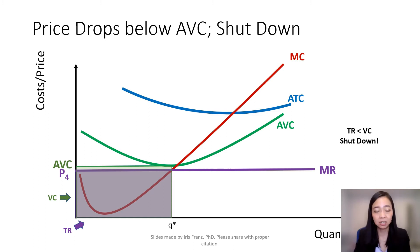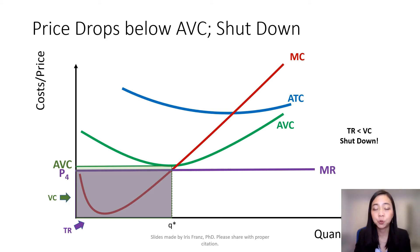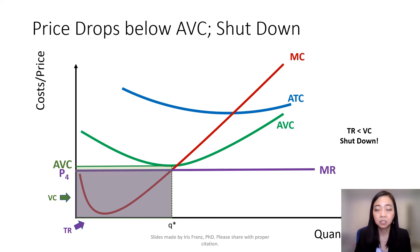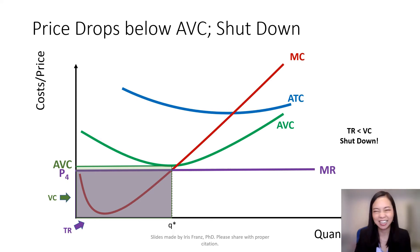If you don't — that means if you operate your firm today — the revenue you get is not enough to pay for variable costs, such as wages for the workers. Then if you operate today, you're going to end up owing money to your workers. Then it doesn't make sense, so you should shut down.